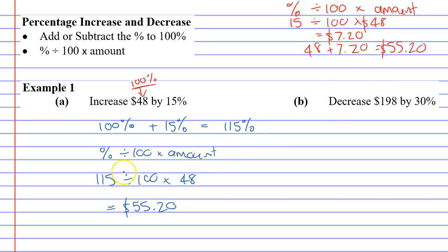The reason it works is because when you found 115% of something, the 100% took the original $48 and the extra 15% took the $7.20 and it just added it all together in one go.